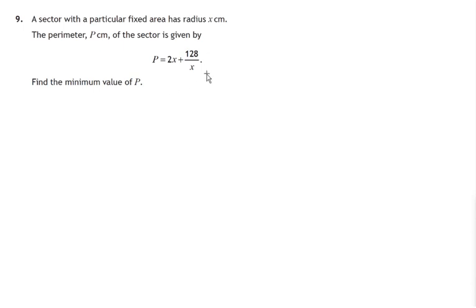Now the context where this formula arose was one of a sector with a given area having a radius of x and p is the perimeter. Since x measures a length, we know from the outset that x must be greater than zero. So that's worth noting for the future.